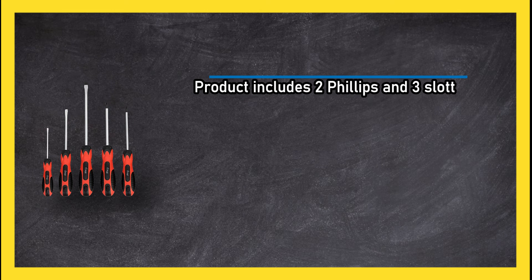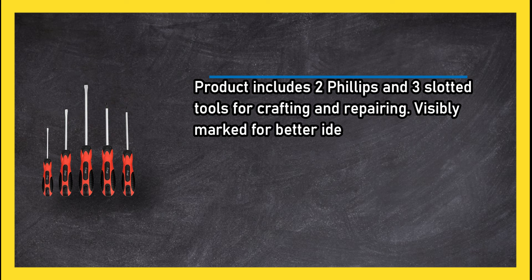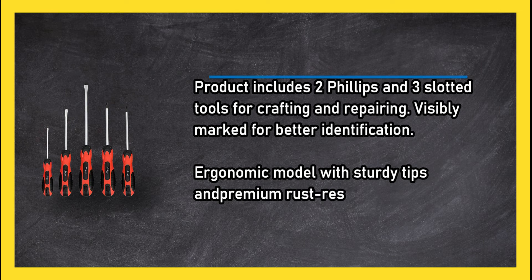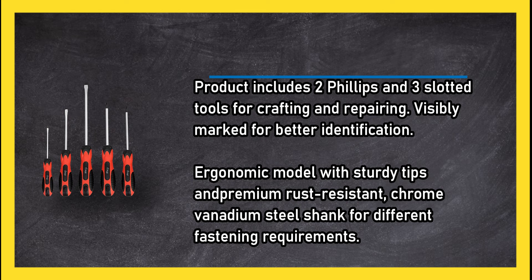Product includes 2 Phillips and 3 slotted tools for crafting and repairing. Visibly marked for better identification. Ergonomic model with sturdy tips and premium rust resistant, chrome vanadium steel shank for different fastening requirements.